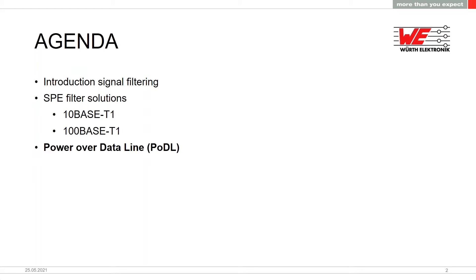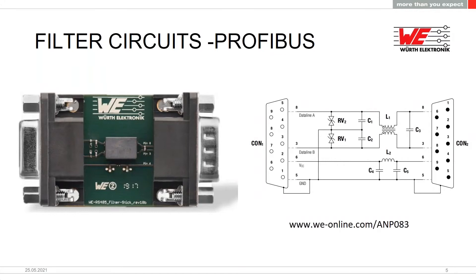First I'll give an introduction about signal filtering — where and why we need filters. Then I'll cover different single-pair Ethernet filter solutions: 10BaseT1 and 100BaseT1 filter solutions. The 1000BaseT1 filter solution is still not finished — we're working on it and may share more later. A big topic covered by my colleague Simon Mark will be power over data line, where we have a lot of new content. Filters are a small part of the whole system, but without the right filter your signal will be disturbed and cannot reach the PHY chip.